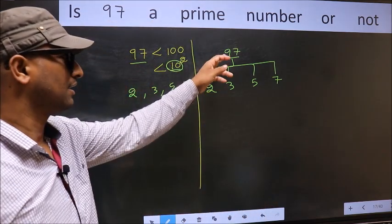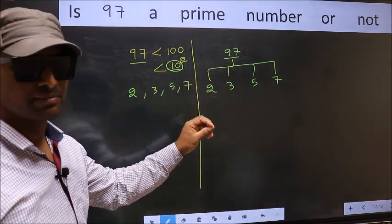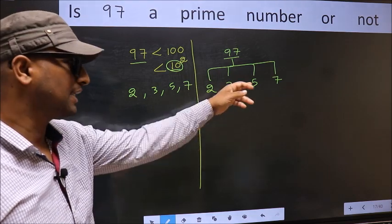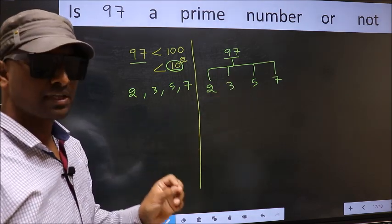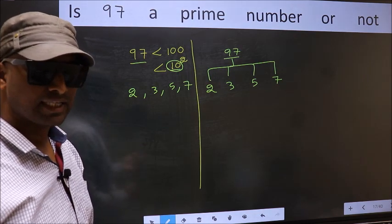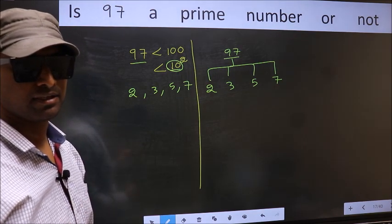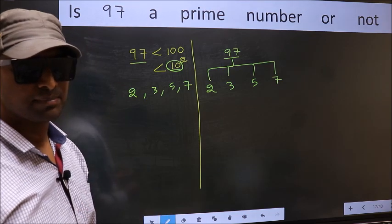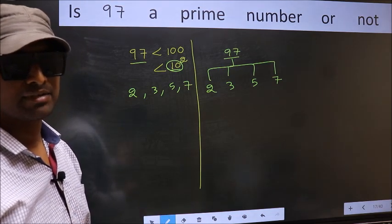If the given number is divisible by any one of these numbers, we say it is not a prime number. Otherwise, it is a prime number. Did you understand the method? Let us check with the divisibility.